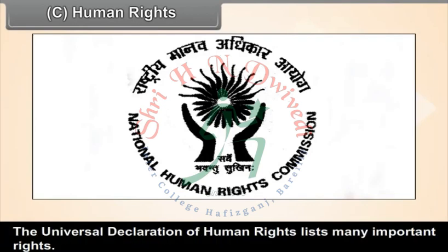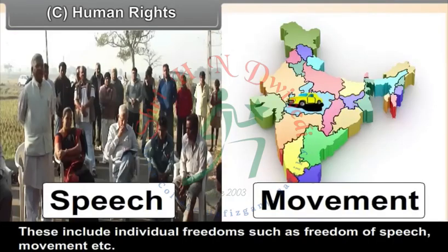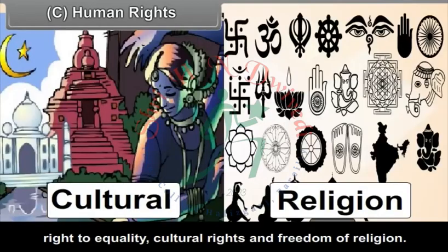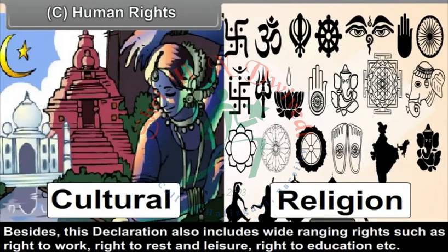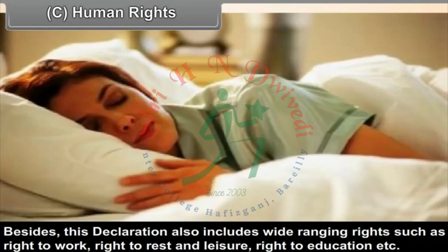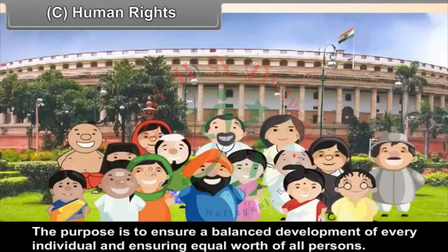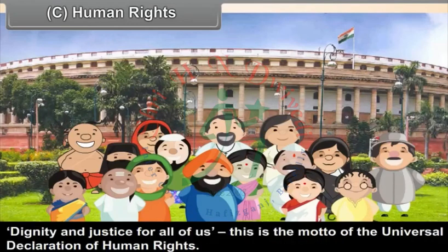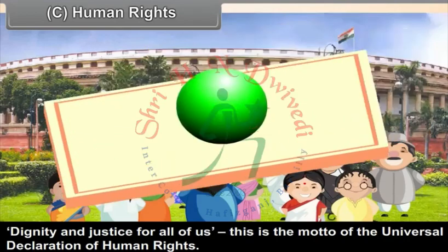The Universal Declaration of Human Rights lists many important rights. These include individual freedoms such as freedom of speech, movement, right to equality, cultural rights, and freedom of religion. The declaration also includes wide-ranging rights such as right to work, right to rest and leisure, and right to education. The purpose is to ensure a balanced development of every individual and equal worth of all persons. 'Dignity and justice for all of us' is the motto of the Universal Declaration of Human Rights.